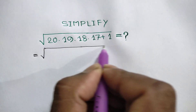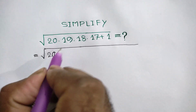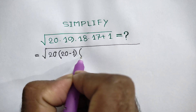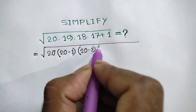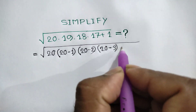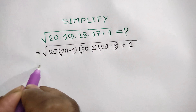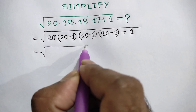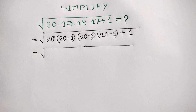This equals the square root of 20 times — 19 can be written as (20 minus 1), similarly 18 can be written as (20 minus 2), and 17 can be written as (20 minus 3) — plus 1.